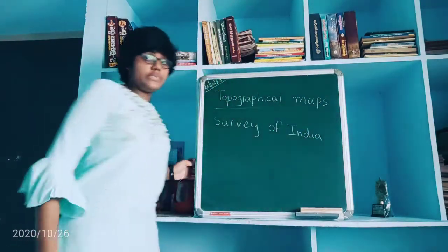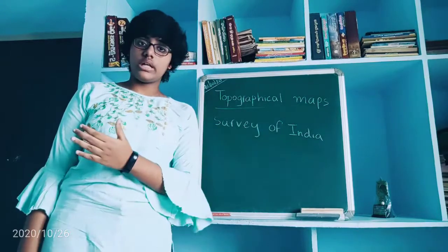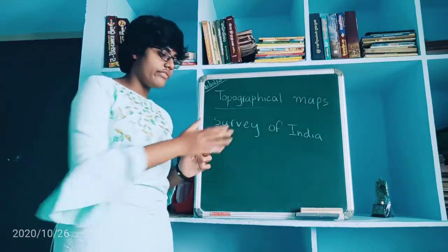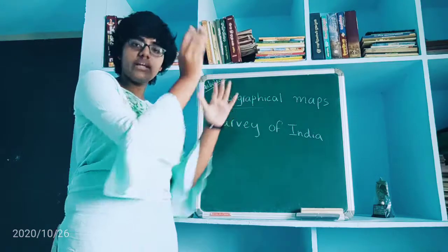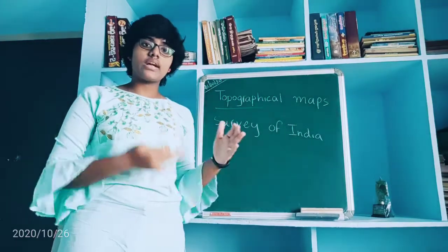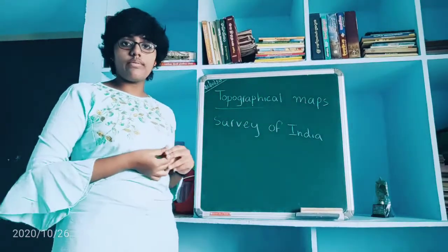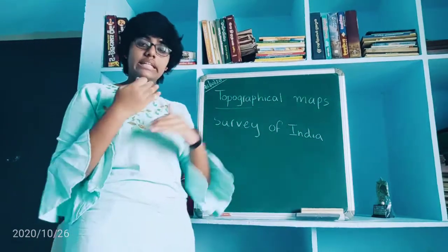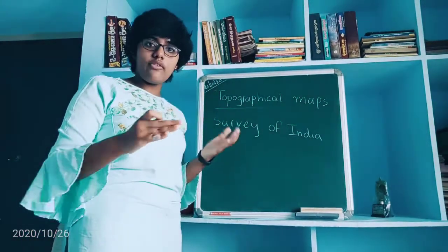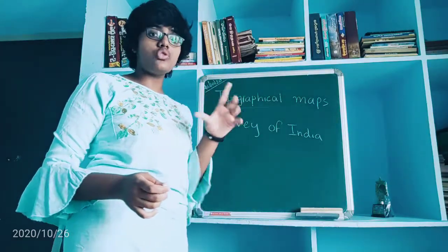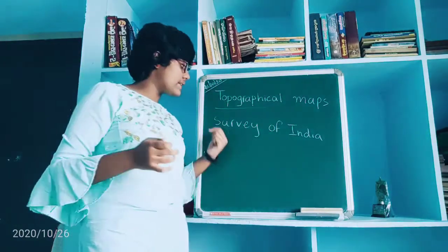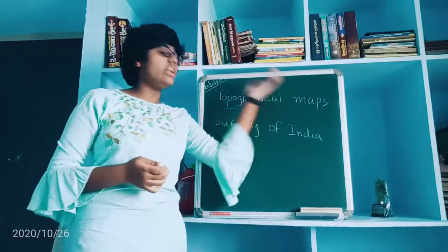Topographical maps do not remain the same forever — they change. For example, the Survey of India may observe that a forest in a certain place has been deforested and buildings have been constructed there. They will then create a new map: removing the forest symbol and replacing it with village and town symbols. That is how the Survey of India designs these topographical maps.